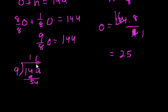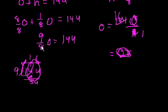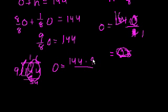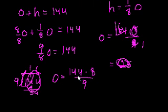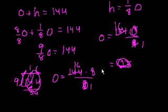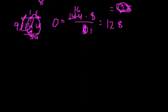I see my mistake. 9/8 times oxygen equals 144, so oxygen equals 144 times 8/9. 9 goes into 144 sixteen times, and 16 times 8 is 128, not 256 — that was the mistake. So there are 128 grams of oxygen. That's choice D.